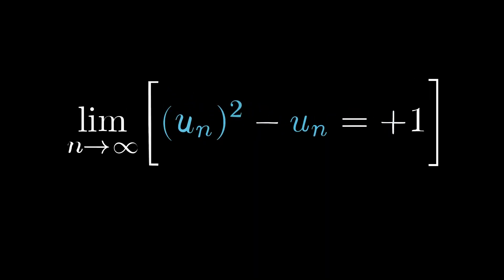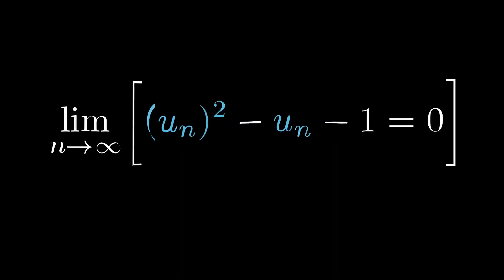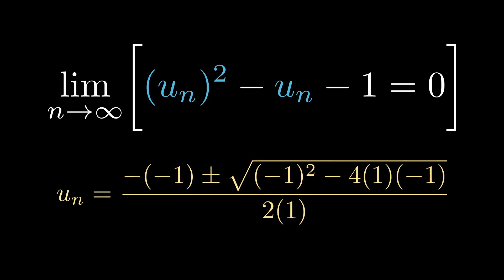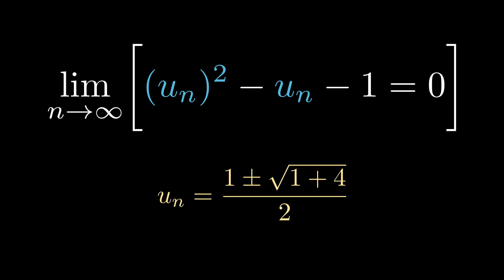After some simple rearranging where we multiply the top and bottom by u(n) and then collect like terms on one side, we have something which looks quite familiar to a lot of you, a quadratic. We can now easily solve for u(n) by substituting the coefficients from the quadratic above, and we get the solution that u(n) is equal to 1 plus or minus the square root of 5 all over 2.